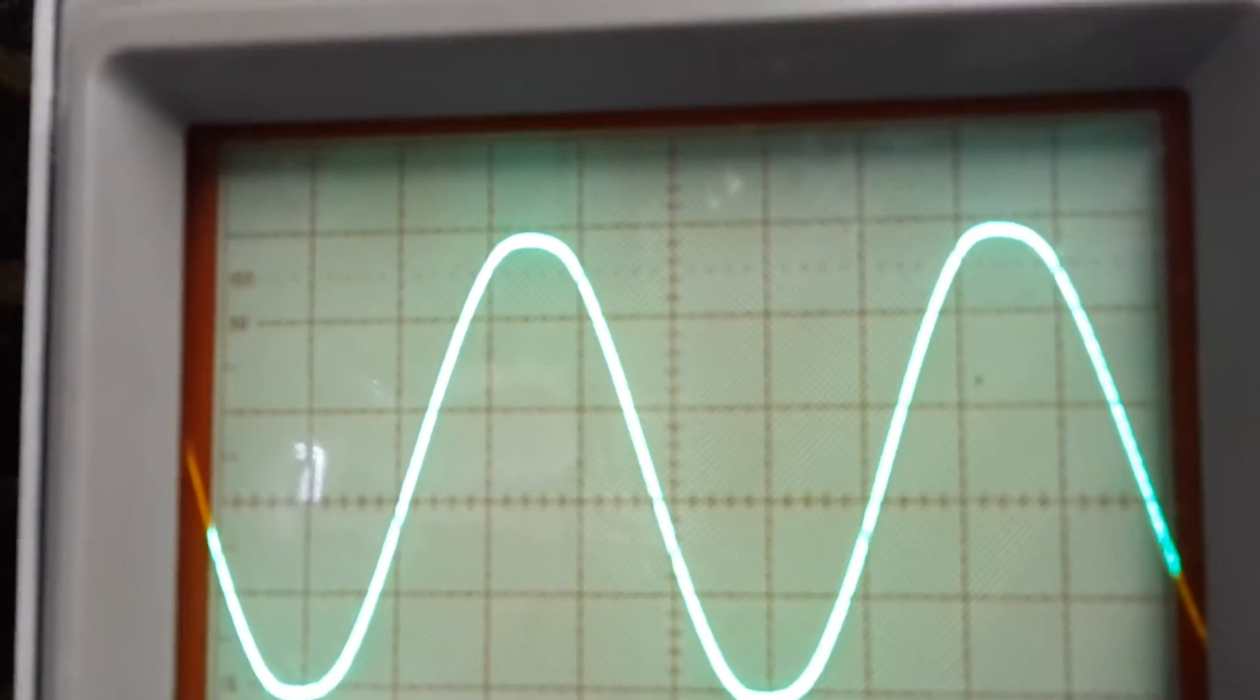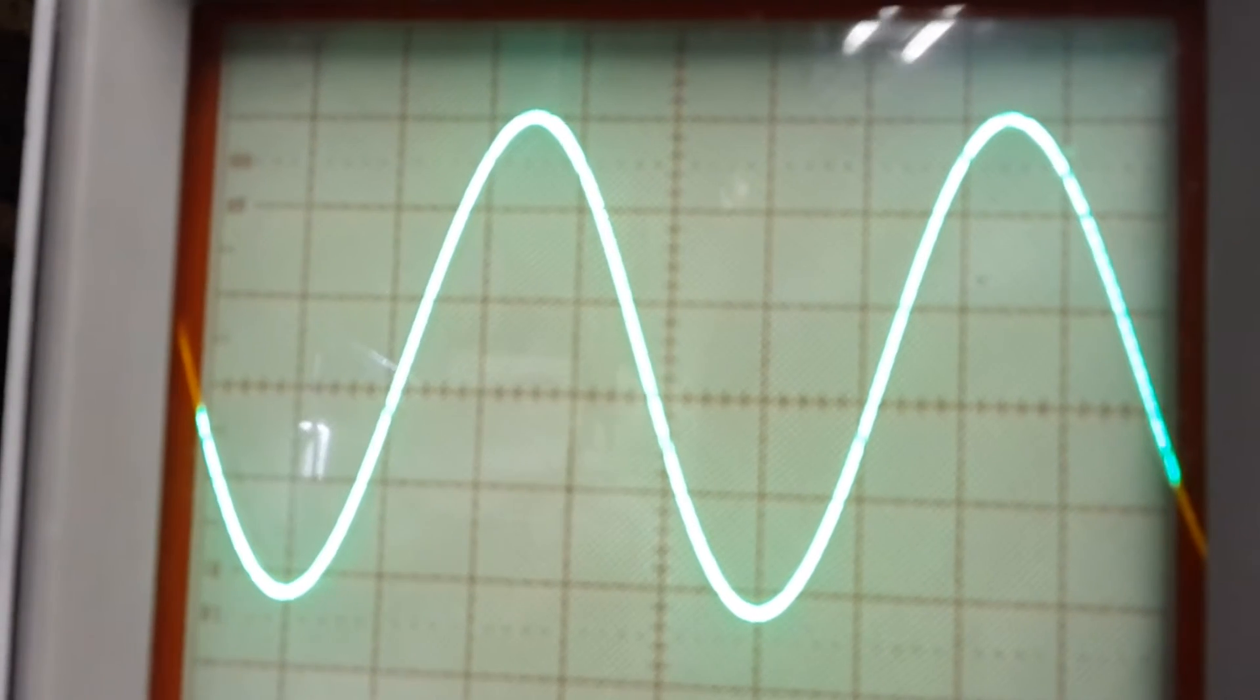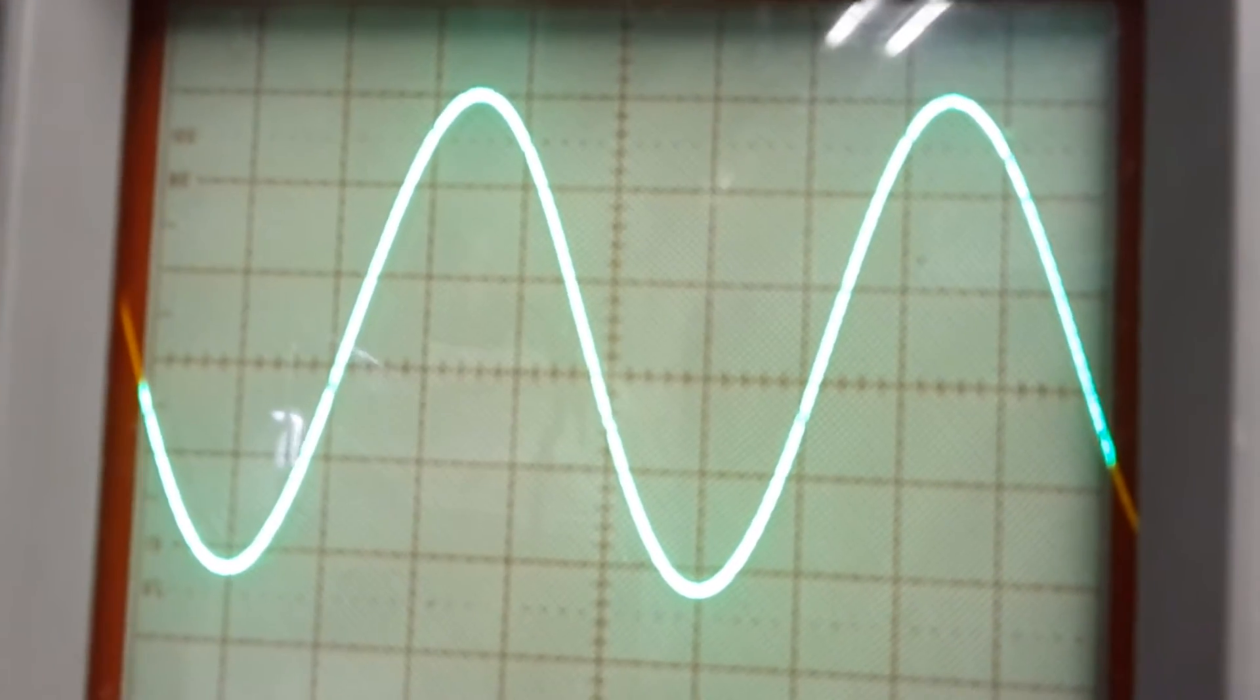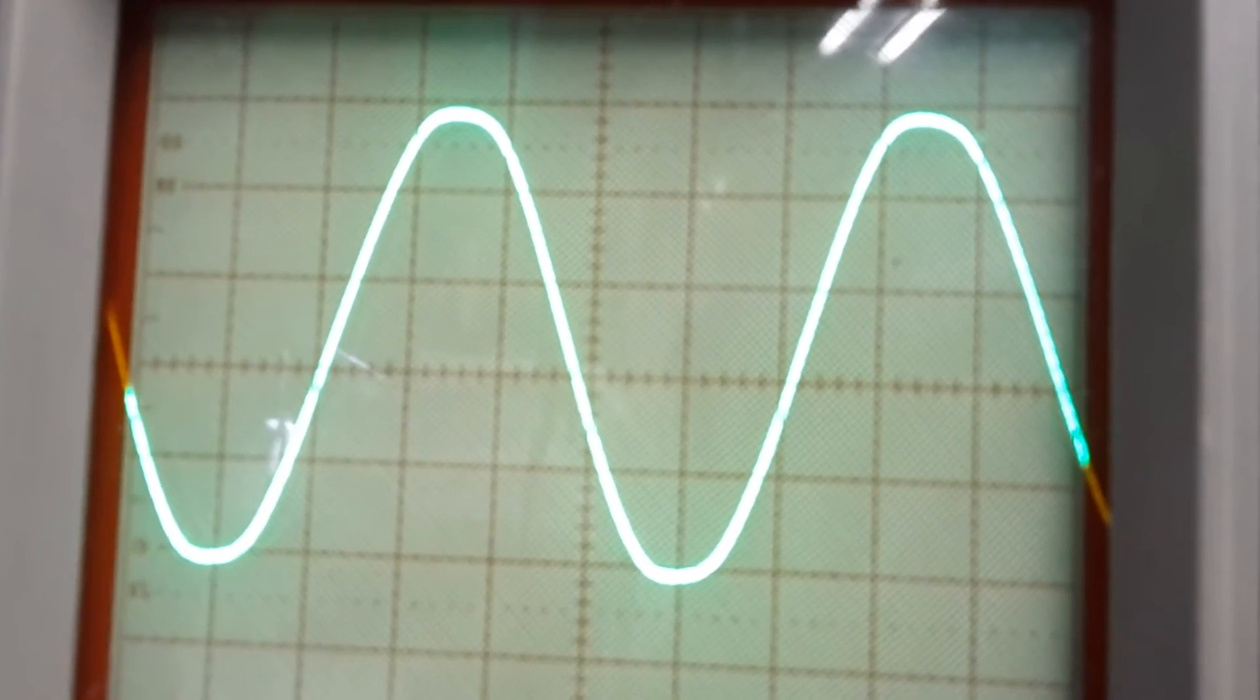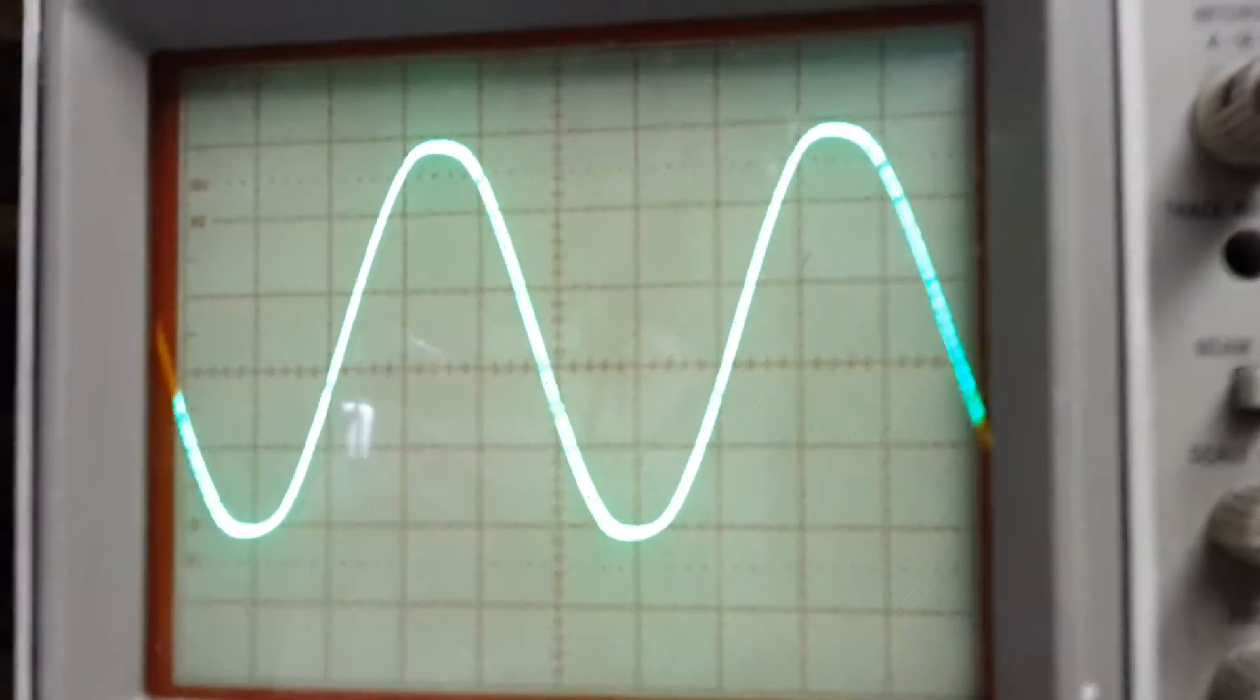I'll turn it off again. So that's soft clipping off, you've got the nice peak, and then you've got the soft rounded top of the waveform when soft clipping is in.